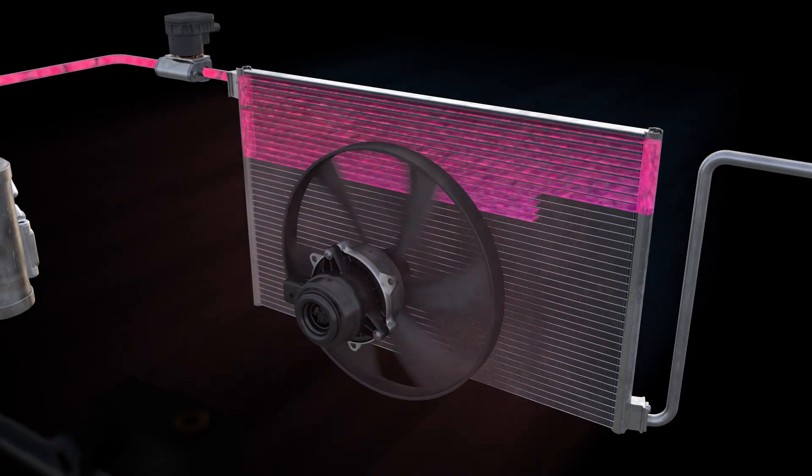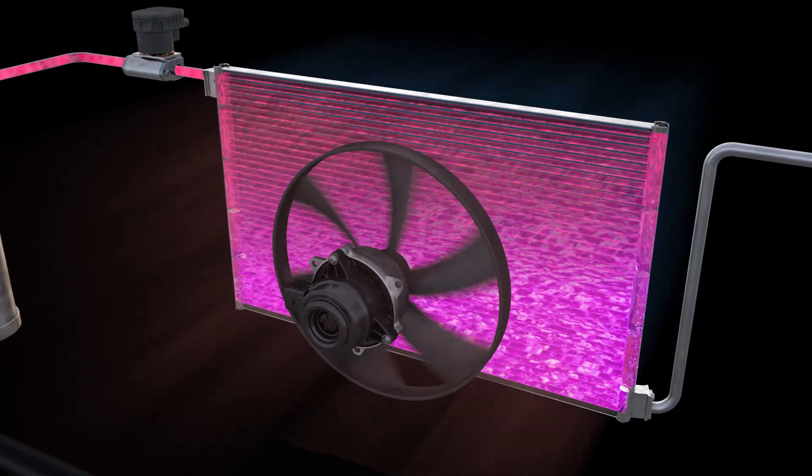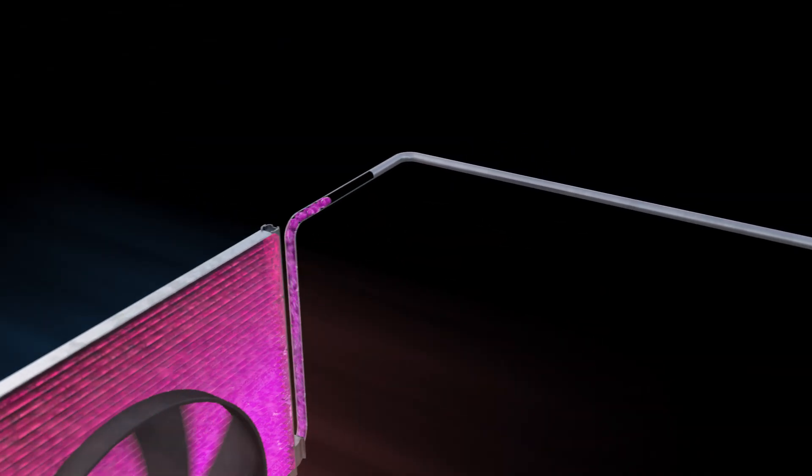The refrigerant reaches the condenser at a pressure of around 18 bar and a temperature of approximately 100 degrees Celsius. In the condenser, the airstream and the fan cool the refrigerant to such an extent that it condenses. Now liquid, it flows onto the expansion valve.